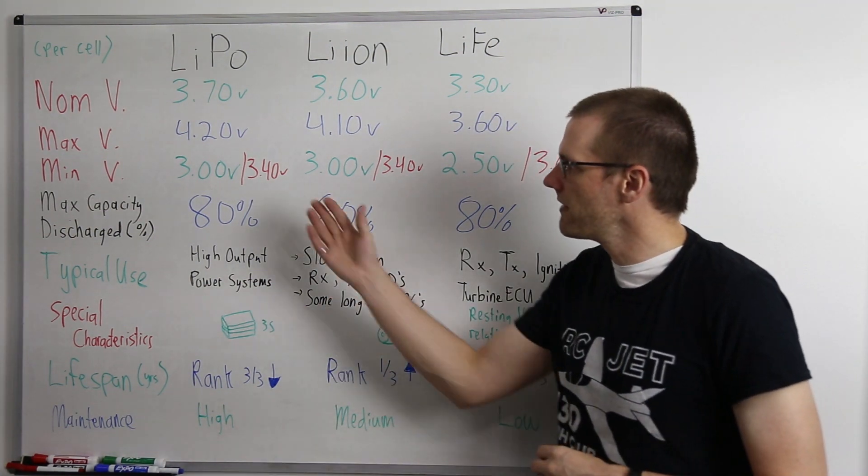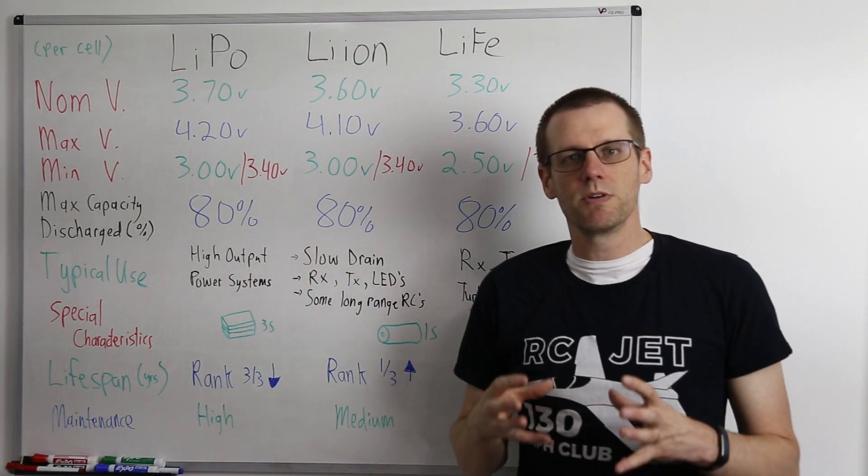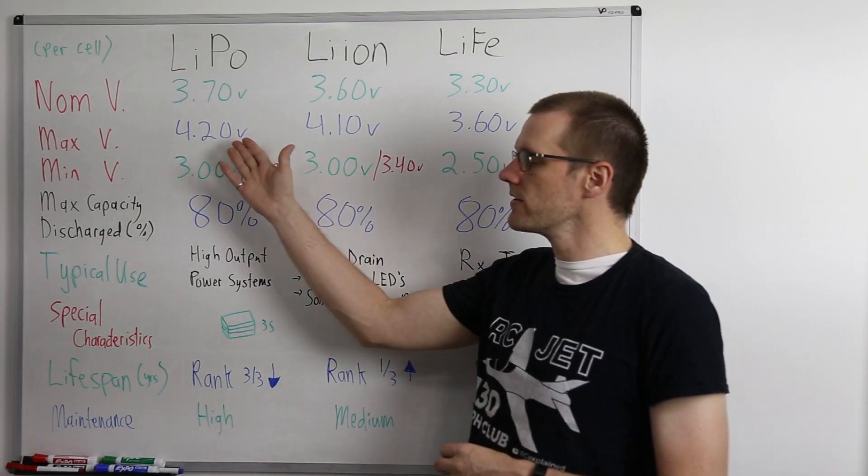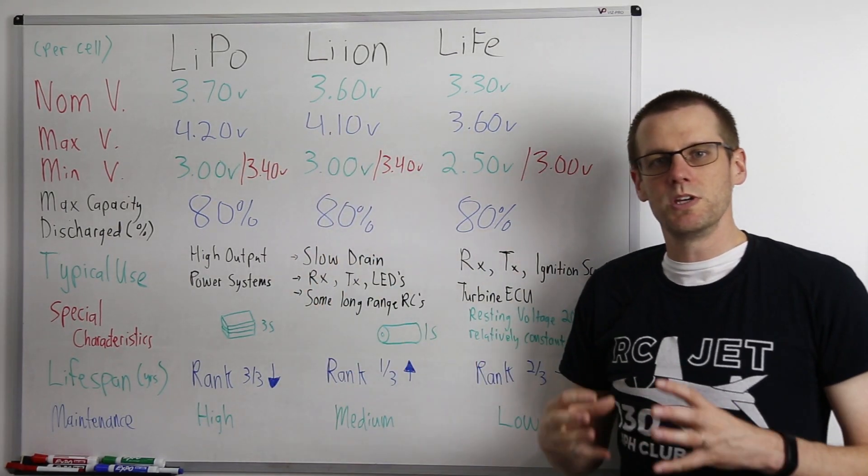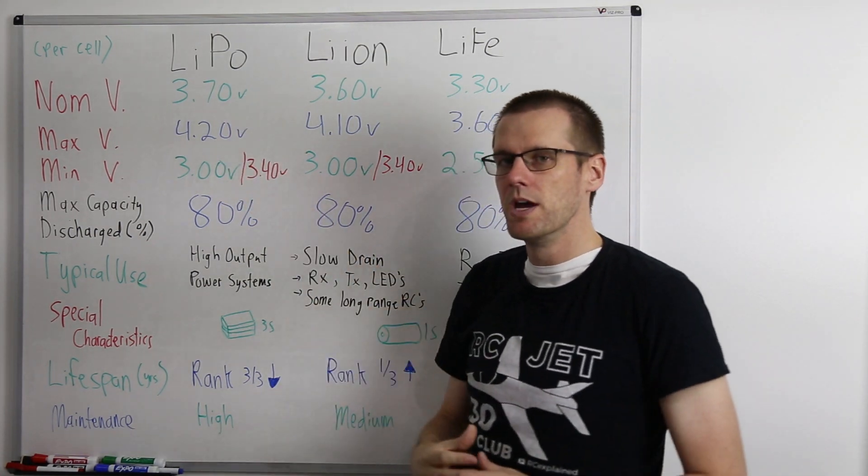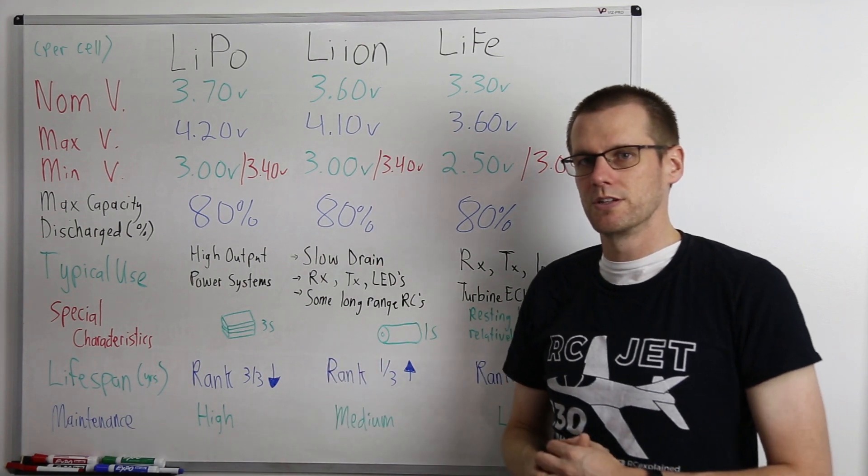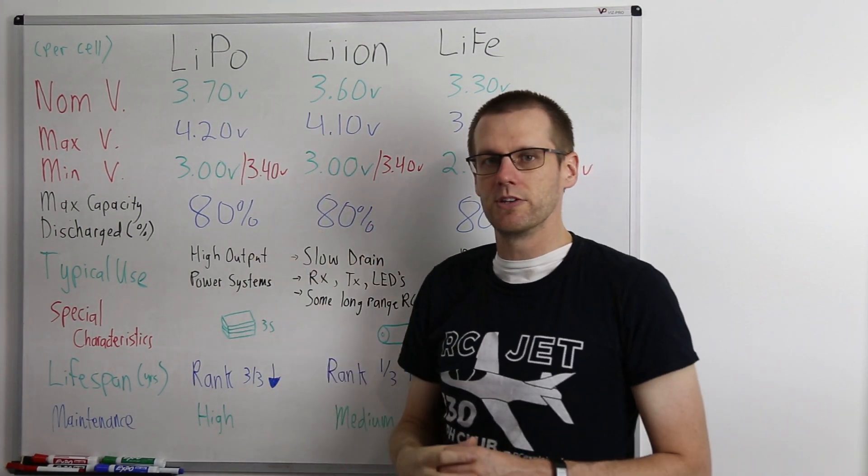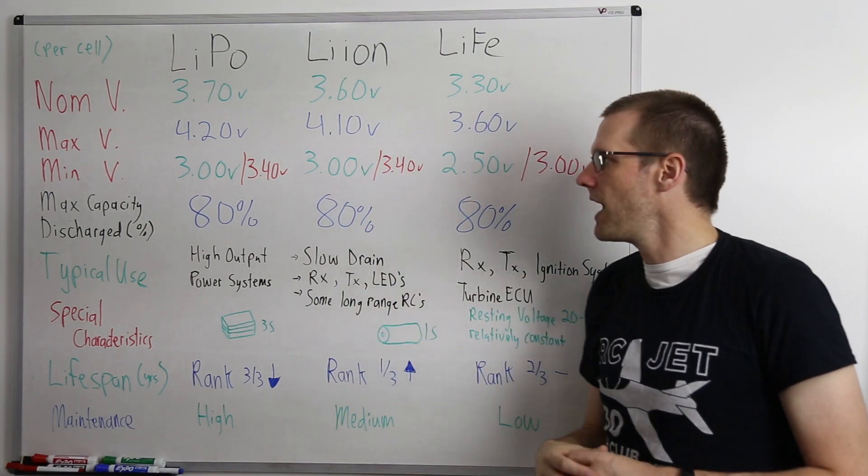Let's talk about the second value that we have here up on the board, and that is our maximum voltages for every cell. Right here, you can see that there are some differences there between each one of the battery chemistries, and the biggest thing to focus on is the difference between the maximum as well as your nominal voltage.